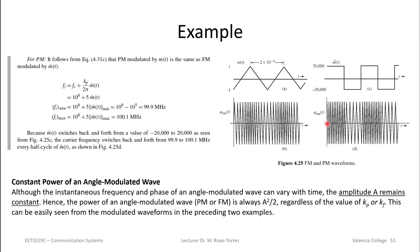One important aspect of angular modulated waveforms is that they have a constant amplitude A. Notice in both the FM and PM waveforms that the magnitude of the carrier stays constant. Therefore, the output power of an angle modulated waveform — whether PM or FM — is always A²/2, proportional to that constant. It doesn't matter what k_p or k_f are; it's always a constant.